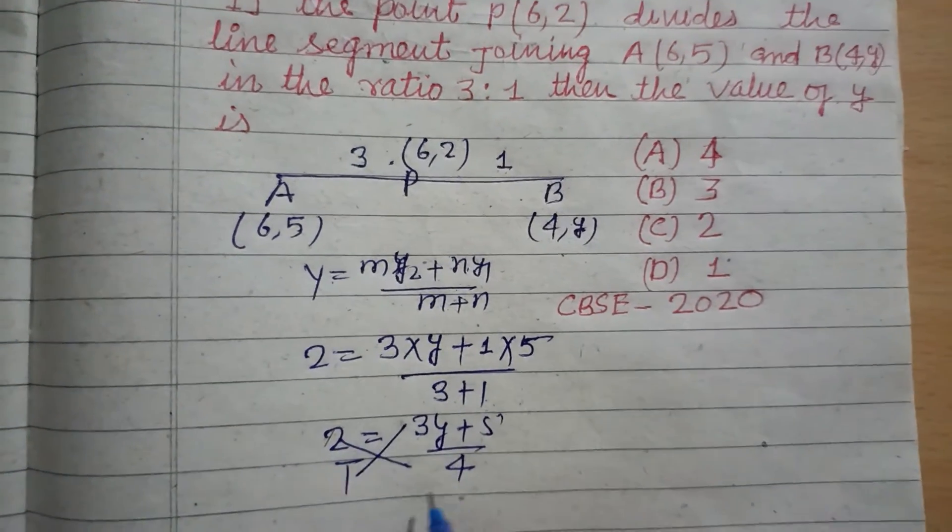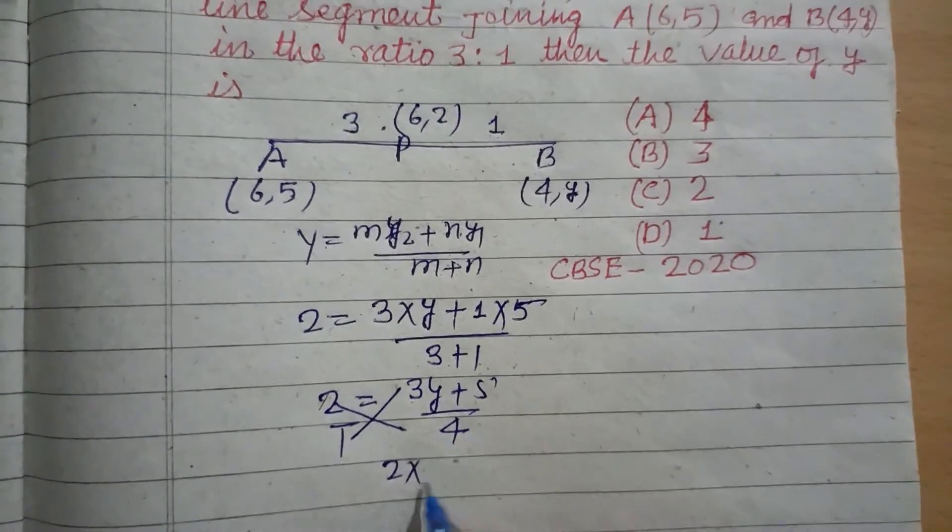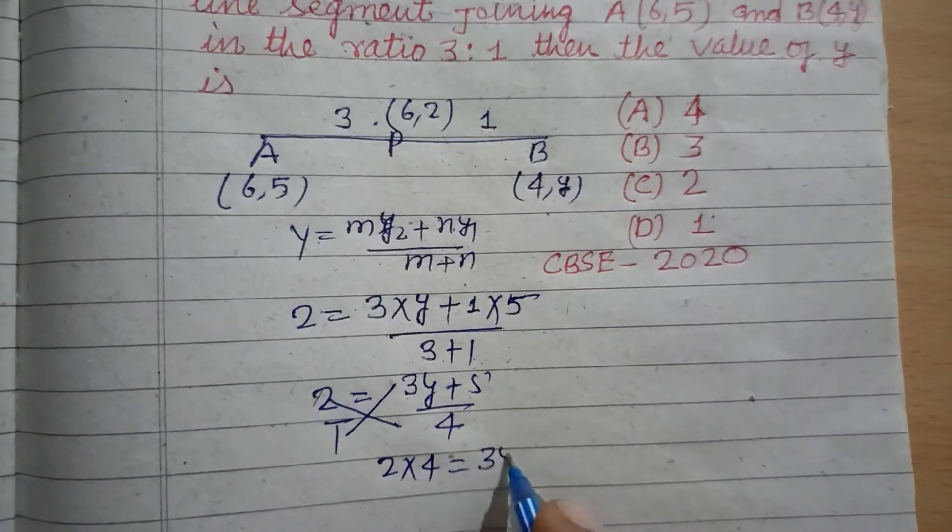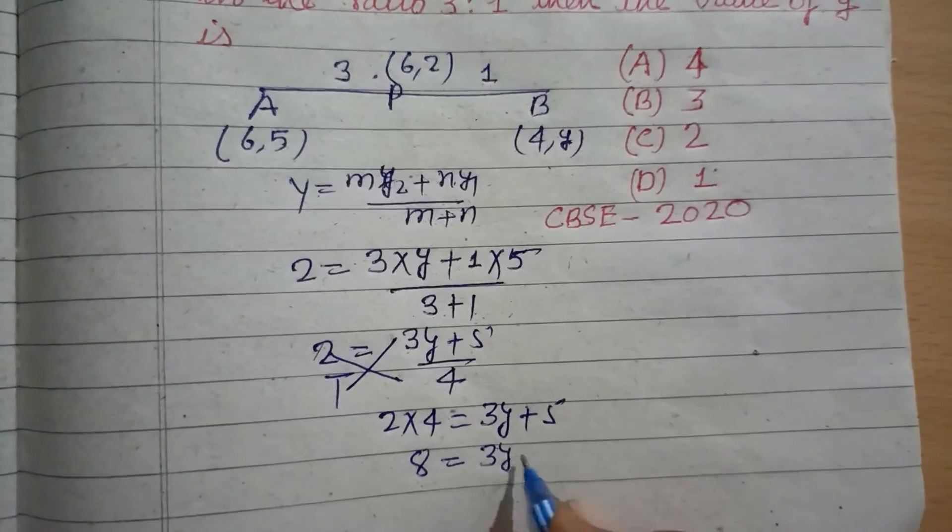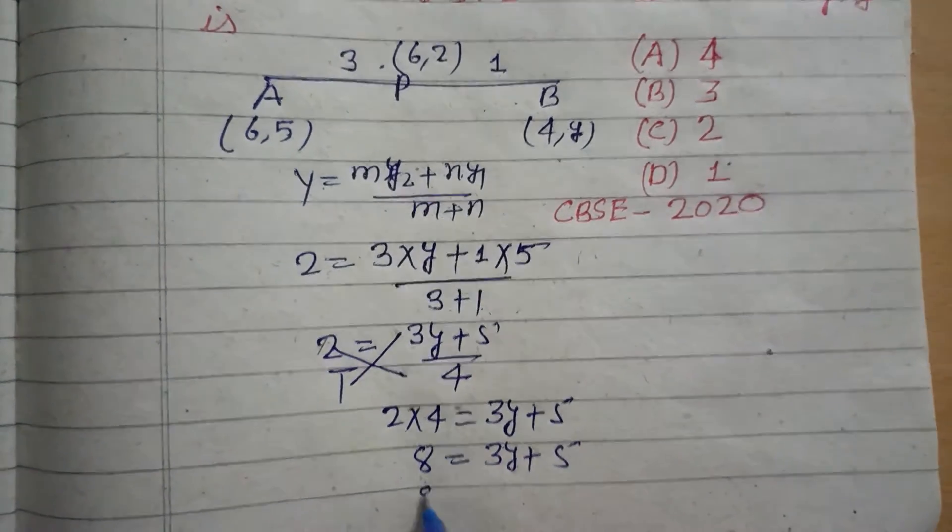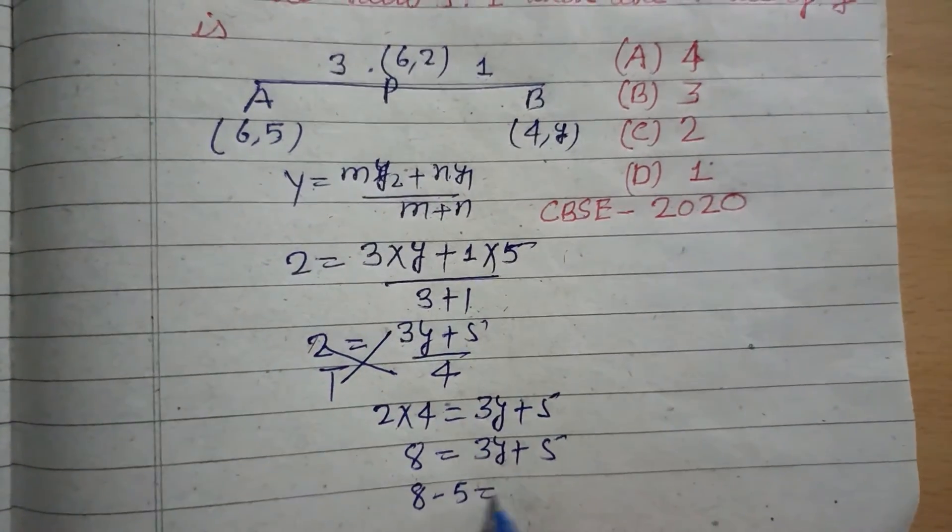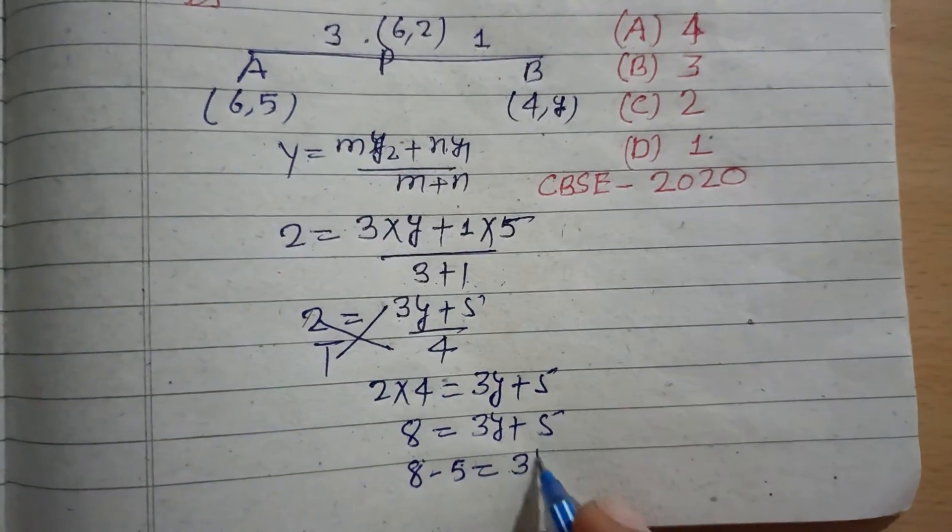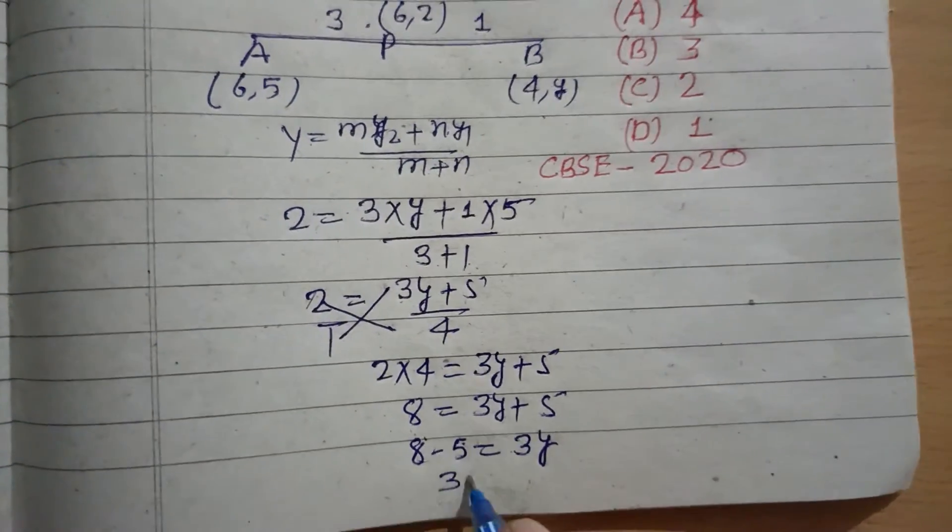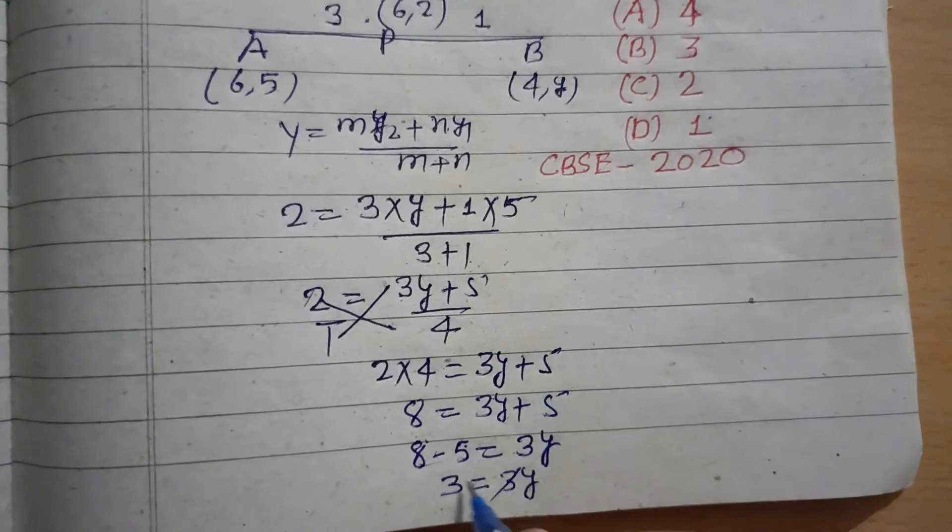On cross multiplication we get 2 times 4 equals 3y plus 5. This is 8 equals 3y plus 5. We bring 5 towards 8 so it becomes negative. So 8 minus 5, this is 3 equals 3y.